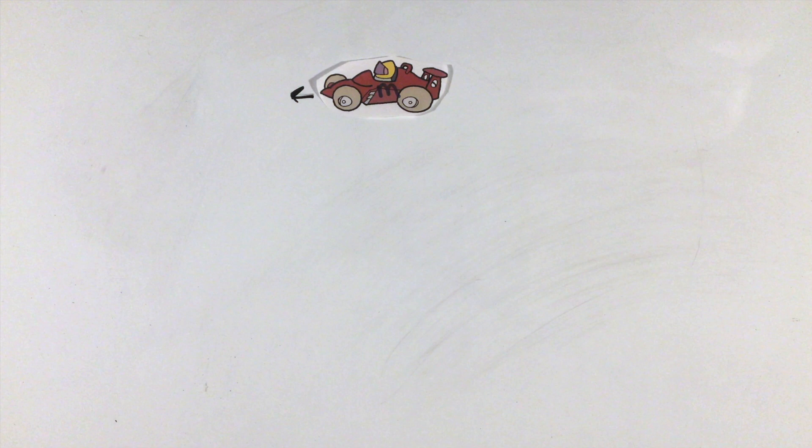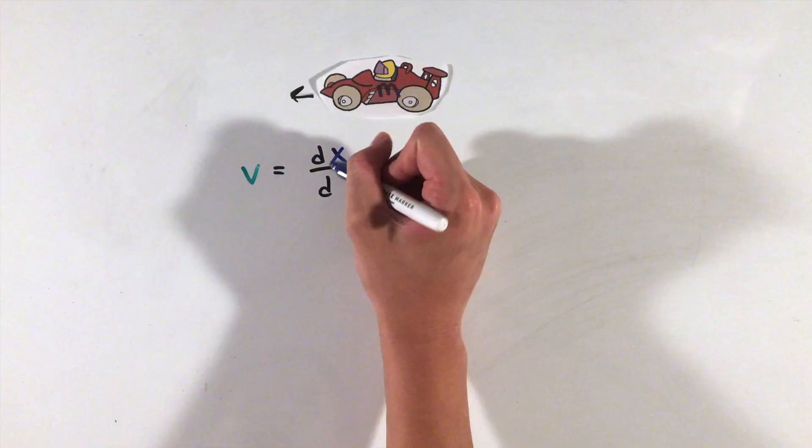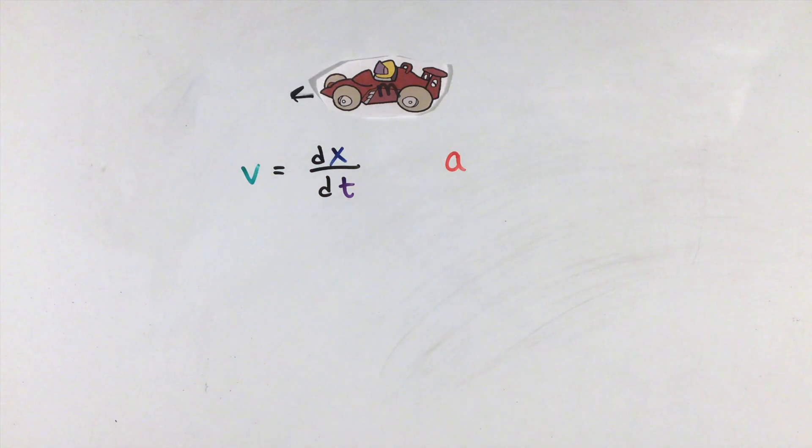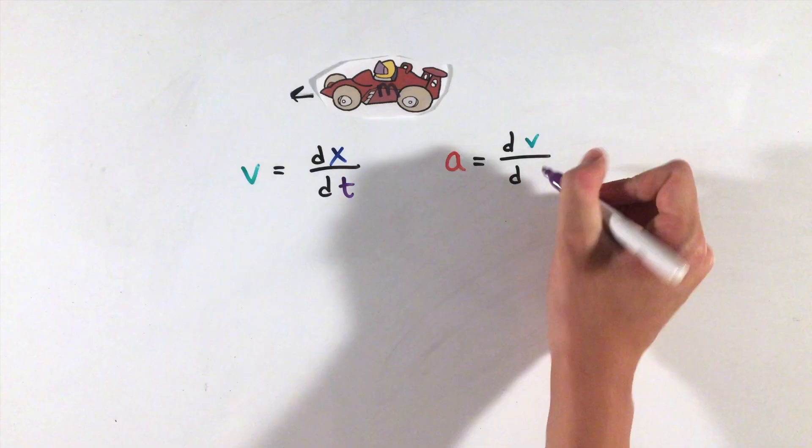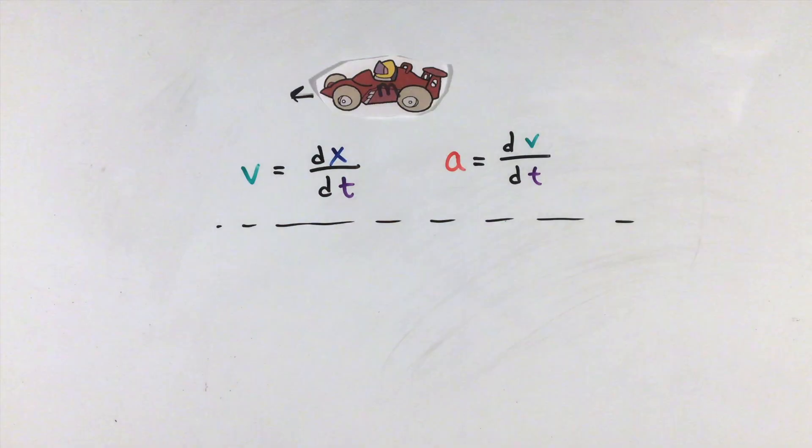To begin, we learned in AP Physics 1 that velocity was the rate of change of displacement and acceleration was the rate of change of velocity. Using the calculus equivalents, velocity will now be defined as the derivative of position with respect to time and acceleration the derivative of velocity with respect to time.